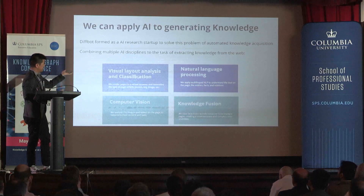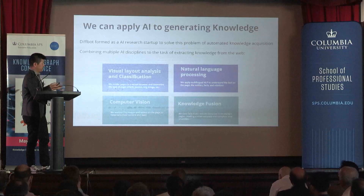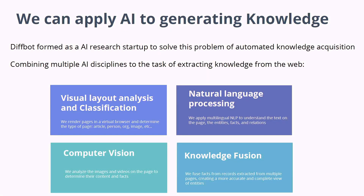In our pipeline, the first stage is taking all that deep information from the renderer and classifying the page. We found that the web can be top-level classified into about 20 different page types covering about 98% of the surface of the web. These include article pages, navigational pages, people pages, organizational pages, product pages, image pages, discussion threads, and FAQs — about 20 top-level types in total. We use supervised learning to classify each page into one of these.